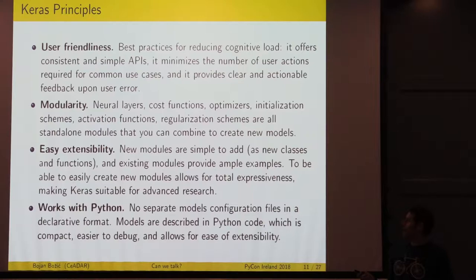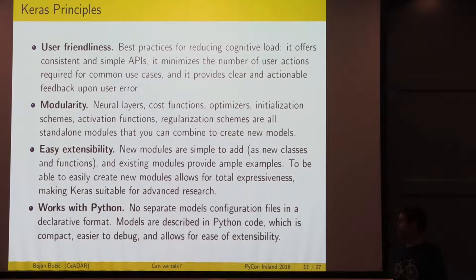It's very user friendly. The API is pretty easy to use. You get quite good feedback if you have some errors. It supports neural layers, cost functions, optimizers, everything that's really important. It's very easily extensible. You can use it even for advanced research. In machine translation, it's used quite frequently. It works with Python, which makes it very easy to combine with all the other libraries that we love in data science.